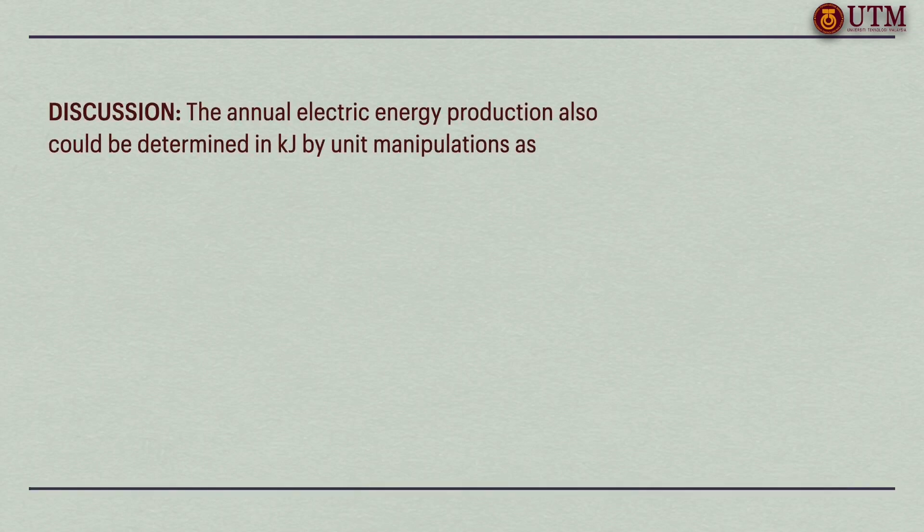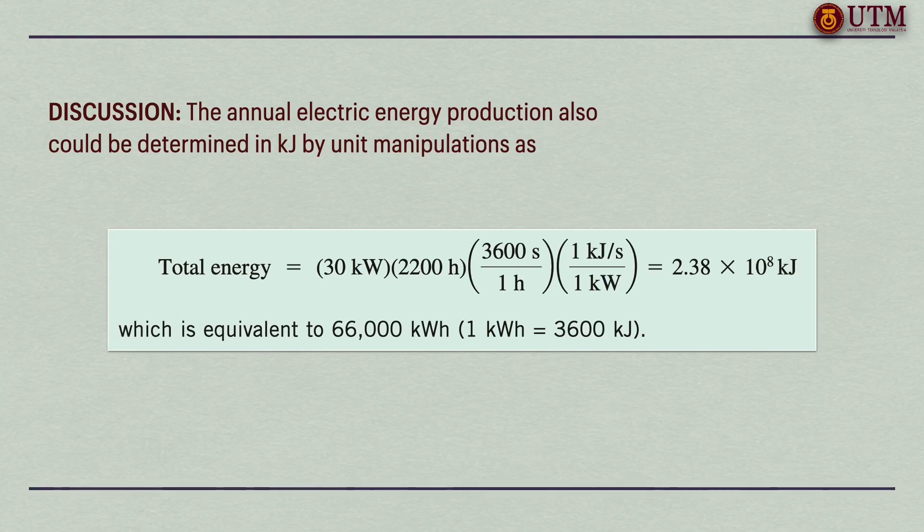The annual electric energy production also could be determined in kilojoule by unit manipulations as follows. Based on this expression, the kilowatt, second and hour terms can be eliminated, where 1 kilojoule per second is equal to 1 kilowatt. Therefore, the final answer becomes 2.38 times 10 to the power of 8 kilojoule, which is equivalent to 66,000 kilowatt hour, where 1 kilowatt hour is equal to 3600 kilojoule.